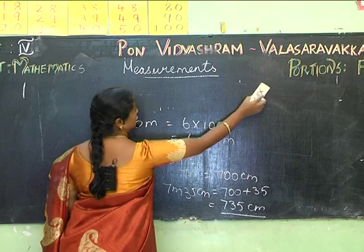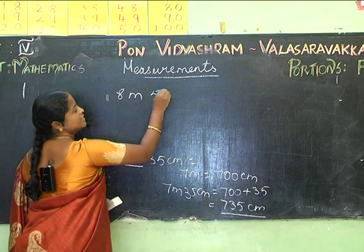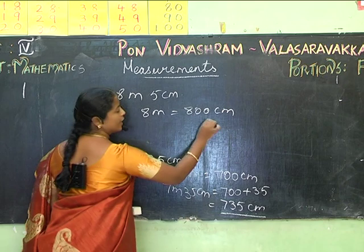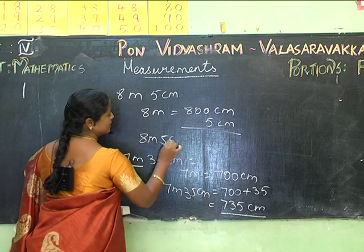If I have 8 meters 5 centimeters: 8 meters equals 800 centimeters, then add the 5 centimeters. So 8 meters 5 centimeters equals 805 centimeters.